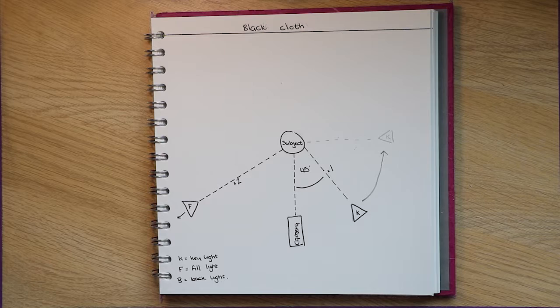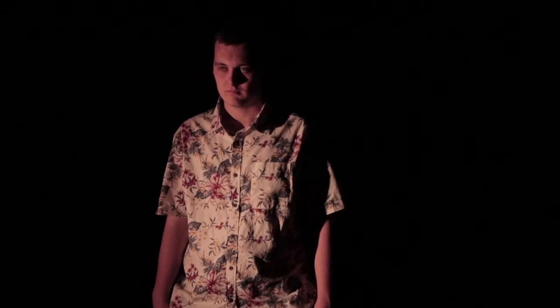To avoid shadows, place the fill light further away from the subject or add a diffuser to the light. If you want a softer light, you can use a reflector or a piece of white card. Using only the fill light creates a very dark and dramatic image.